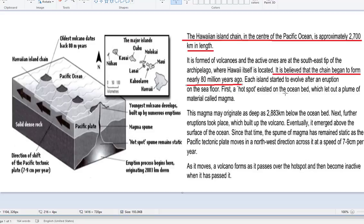First, the hot spot existed on the ocean bed. Well, we can see that here. This is the hot spot. Which set up a plume of material called magma. Again, we see that here. So, there's some logical sequencing going on here. This magma may originate as deep as 2,883 kilometers below the ocean bed. Next, further eruptions took place, which built up the volcano.